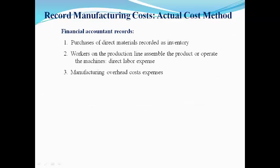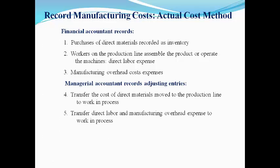The financial accountant records the purchase of direct materials, direct labor expense, and all manufacturing overhead expenses incurred during the period. Direct materials is recorded as inventory, and direct labor and manufacturing overhead are recorded as expenses. All product costs should be recorded as inventory until sold to customers. The managerial or cost accountant moves the cost of direct materials, direct labor, and manufacturing overhead to work in process, an inventory account.